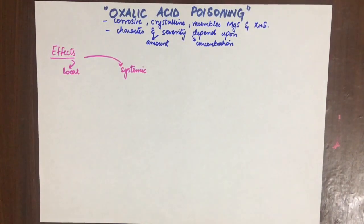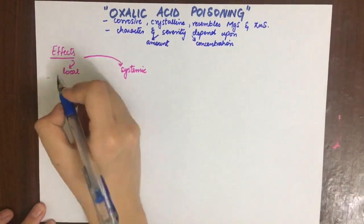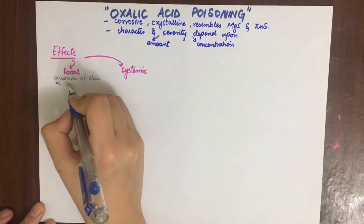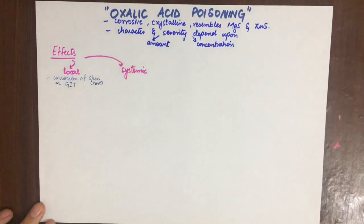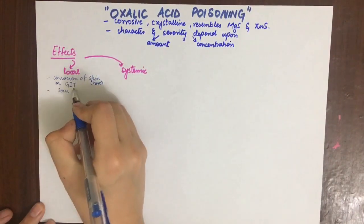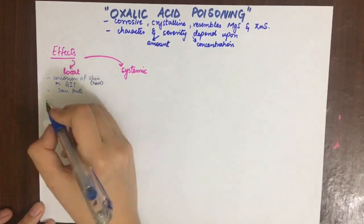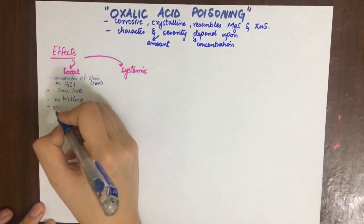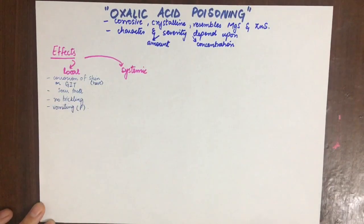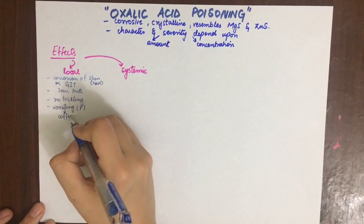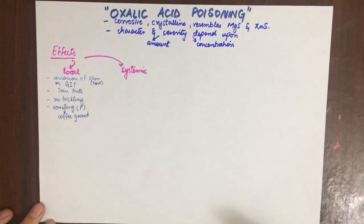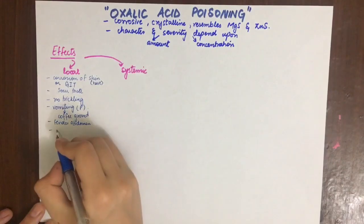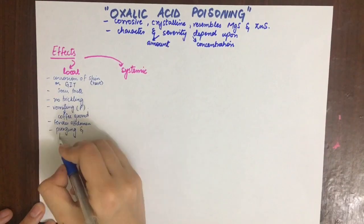The local effects include corrosion of the GIT mucosa or skin, which is very rare. There is a sour taste in the mouth; no trickling is observed as it is a weak acid compared to the mineral acids. The vomiting is continuous and the vomitus contains coffee ground material due to formation of acid hematin. The abdomen is tender, and purging and tenesmus are observed.